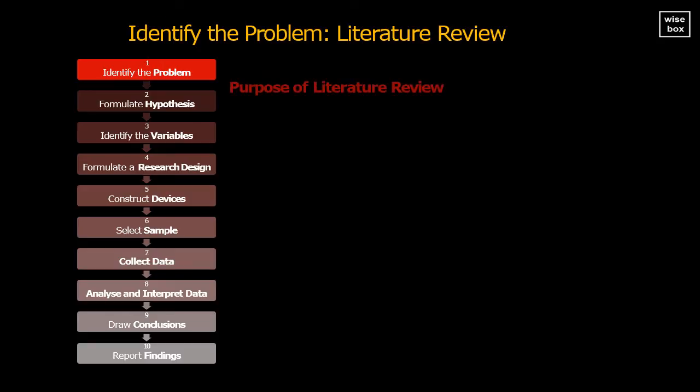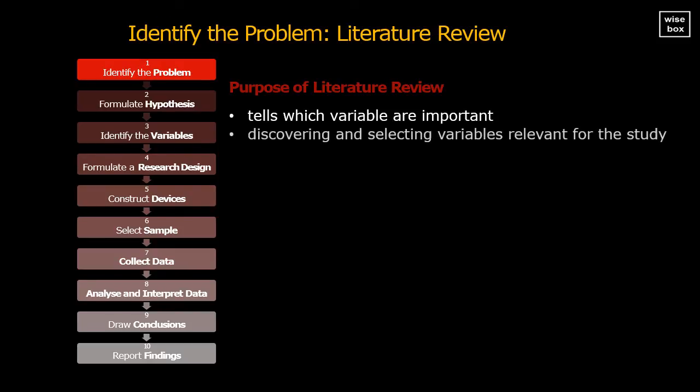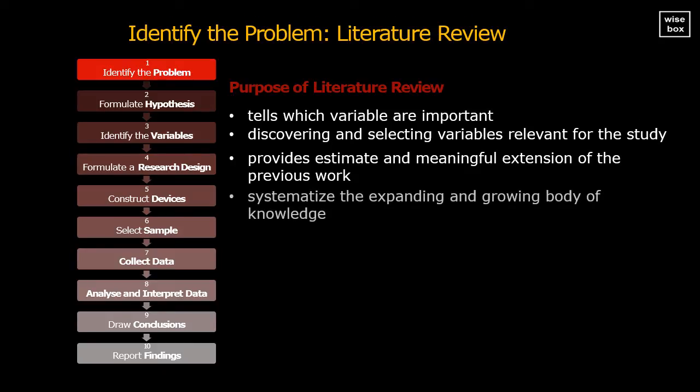The purpose of literature review: It tells us which variables have been found to be conceptually and practically important, and unimportant in the related field. Thus, it helps in discovering and selecting variables relevant for the given study. Provides an estimate of the previous work, and an opportunity for the meaningful extension of the previous work. It helps in systemizing the expanding and growing body of knowledge. This facilitates in drawing useful conclusions regarding the variables under study, and applying them meaningfully in research.